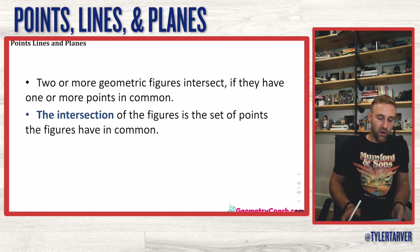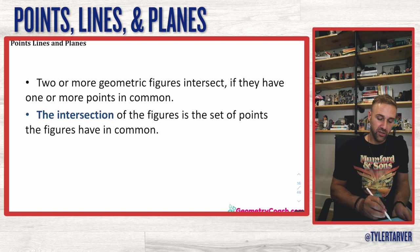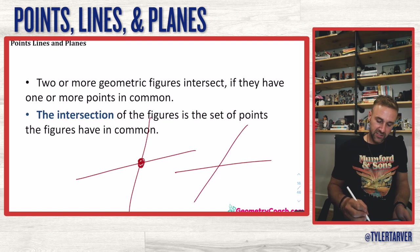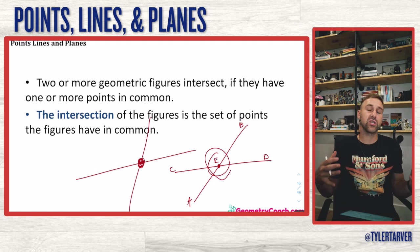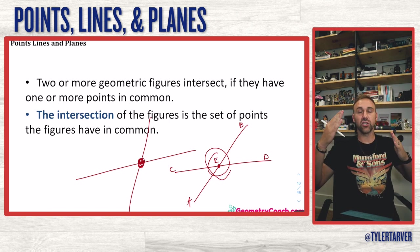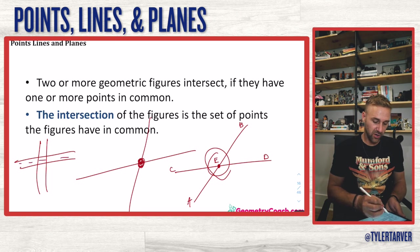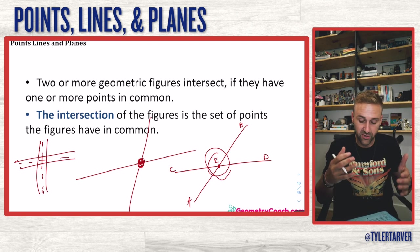Two or more geometric figures intersect if they have one or more points in common. An intersection is wherever two things cross. If you have two lines crossing — say line AB and line CD — the point where they cross, like point E, is the intersection point. Think of two roads crossing: that's what an intersection is.